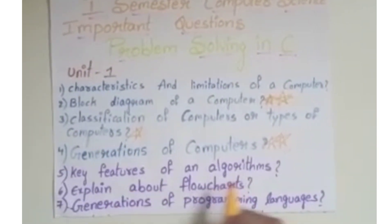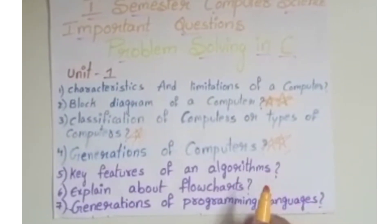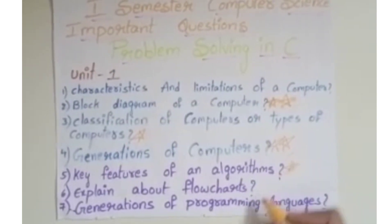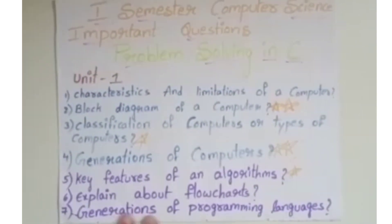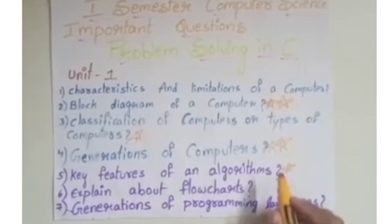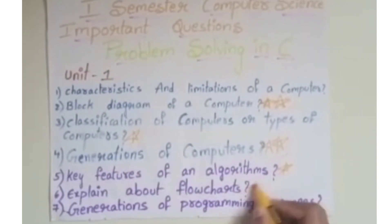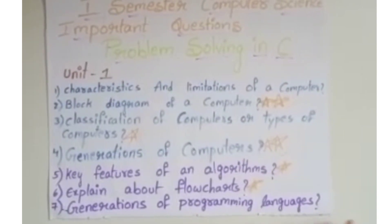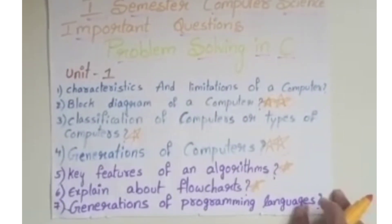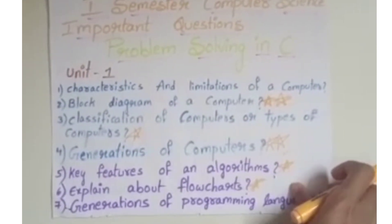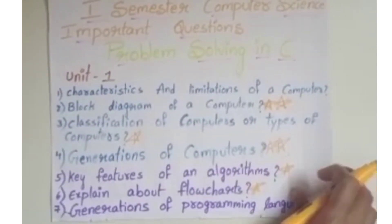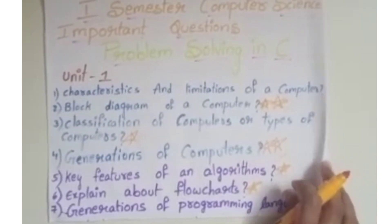Key Features of an Algorithm is an important question. Explain about Flowcharts is also an important question. Generations of Programming Language — all five generations — is an important question. Be very well prepared on these.